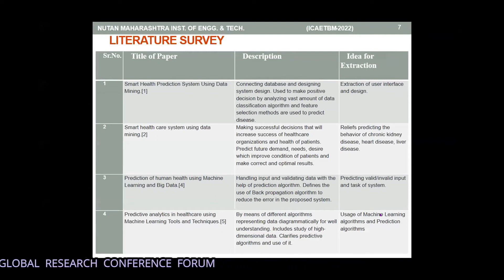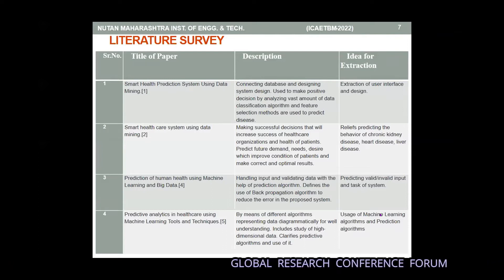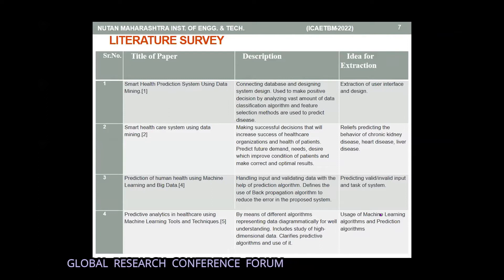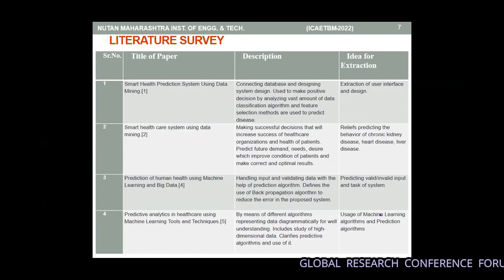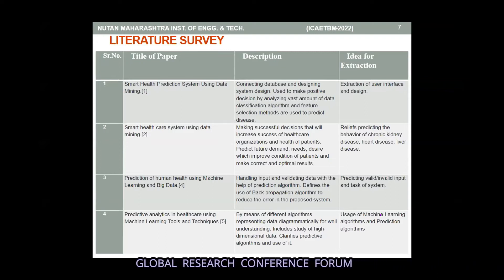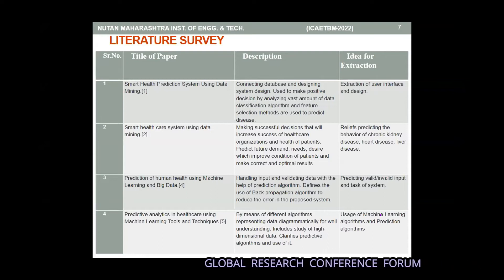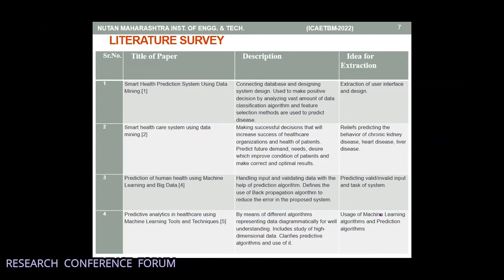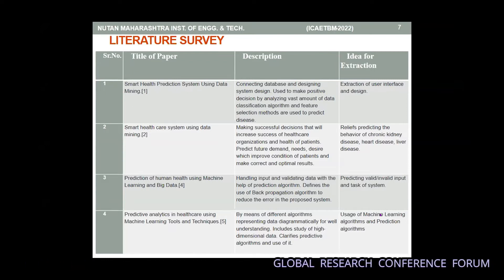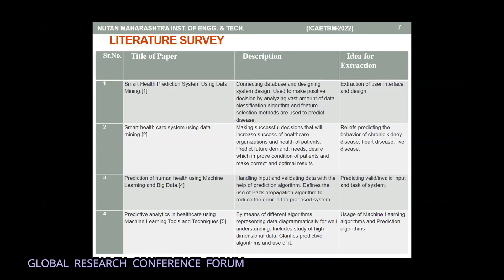Based on that medical field, we have searched some papers. These are the literature survey. The first title is Smart Health Prediction System Using Data Mining. In this, the idea is extracting user interface and design — connecting database and designing a system used to make positive decisions by analyzing vast amounts of data. Classification algorithms and feature selection methods are used to predict the disease. All information related to medical, illness, and syndromes are stored.